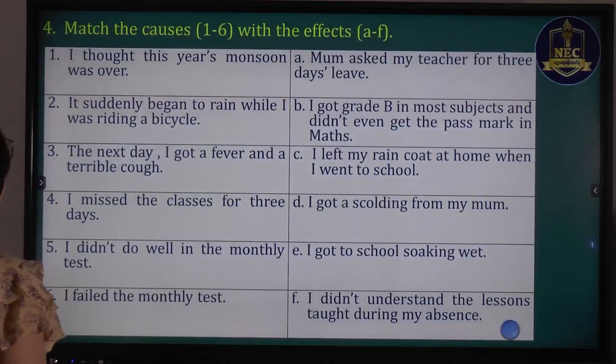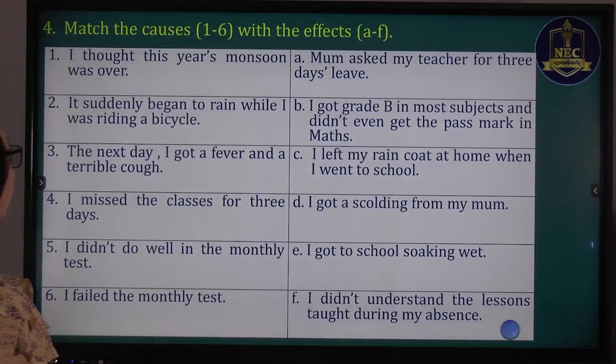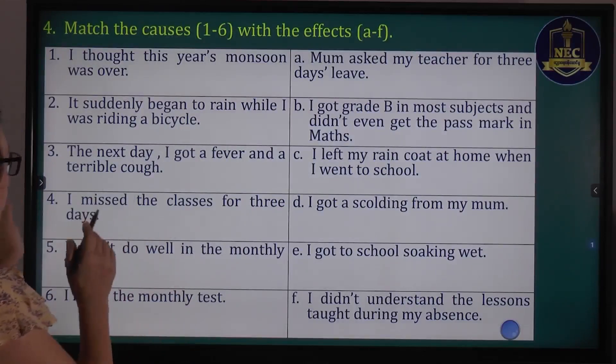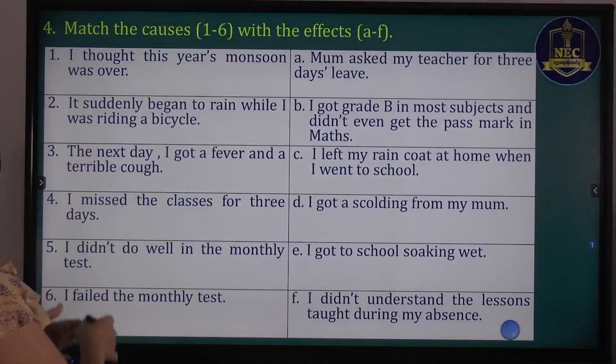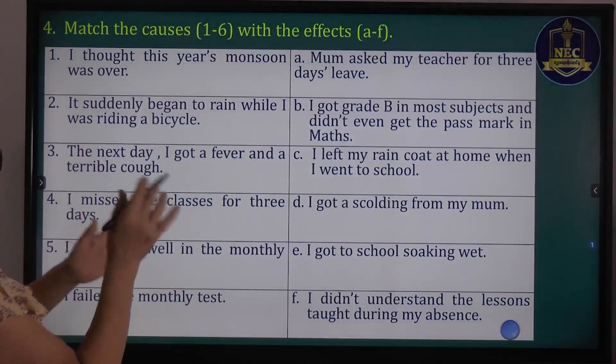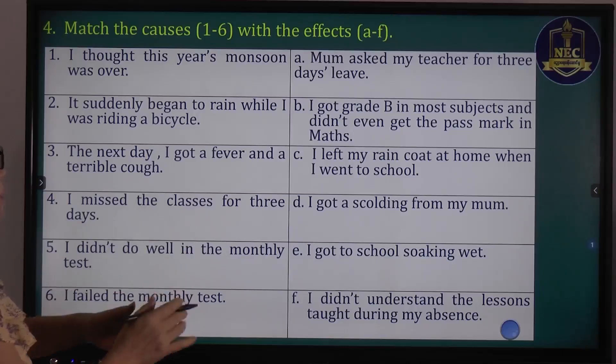Number 4: match the causes 1 to 6 with the effects A to F — causes 1 to 6, effects A to F.